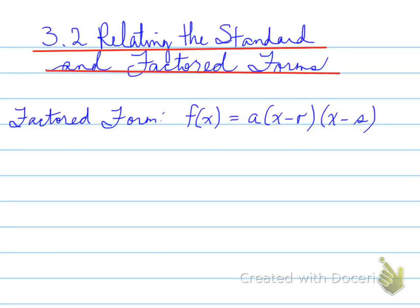All right, relating the standard and factored forms. When we look at the factored form f(x) equals a times x minus r times x minus s, it tells us some information that we need to move forwards with. For example, the r and the s will indicate the roots that we need to be able to find where it hits the x-axis. The a value is another important piece of information. In this example here, the a would be the common factor.